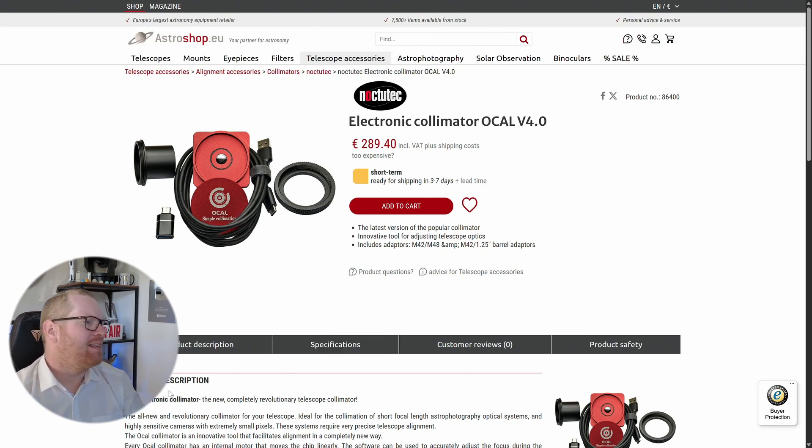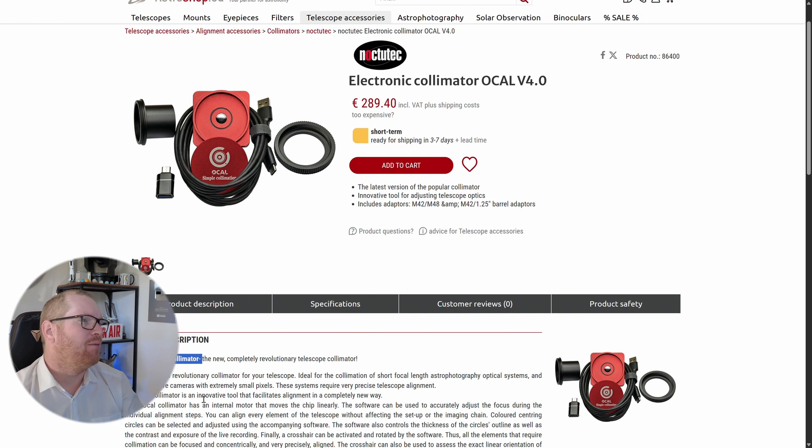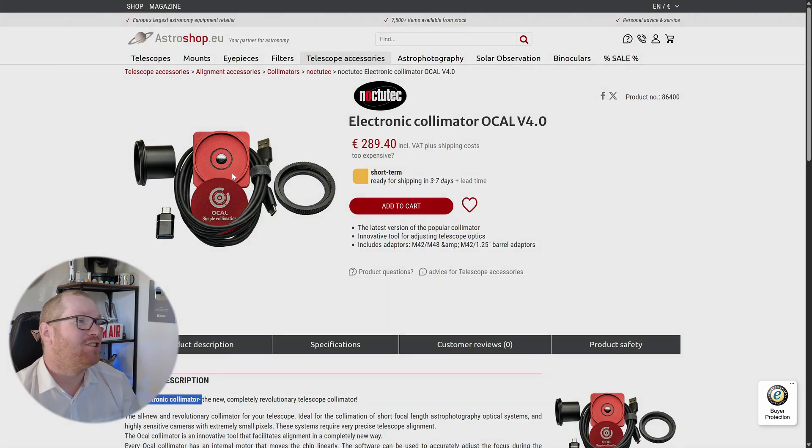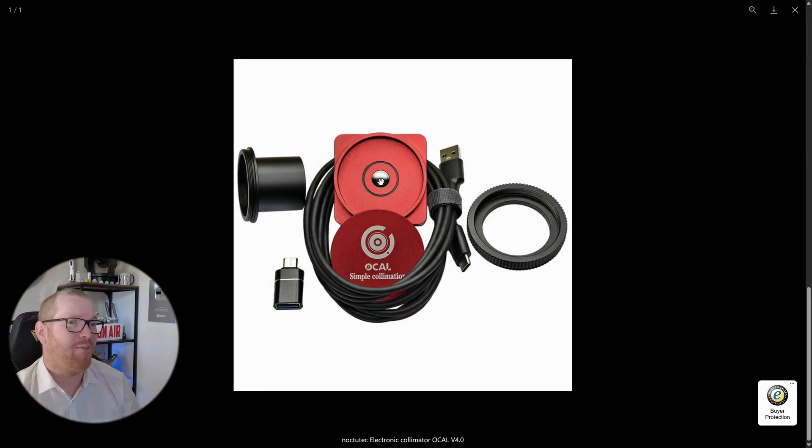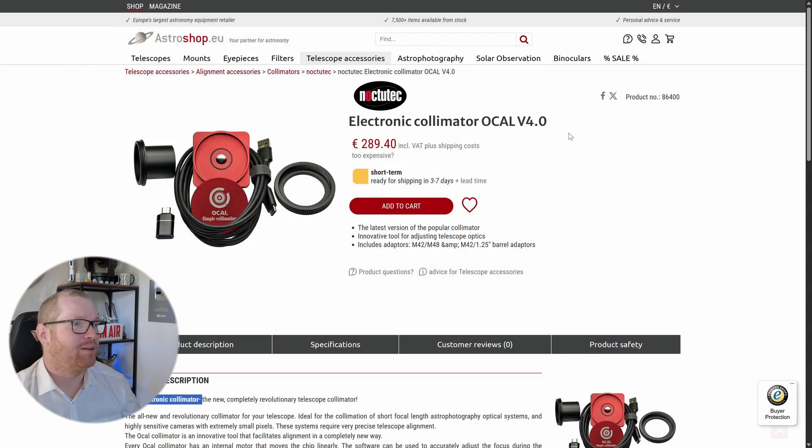I was sitting here looking at the Okel Electronic ColorMator, and this is essentially just a webcam in a metal housing with some proprietary software that comes with it. And I thought, that's a lot of money for what's essentially just a webcam. Surely I can DIY that for cheaper.